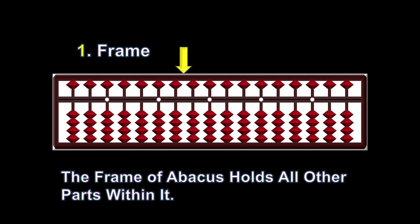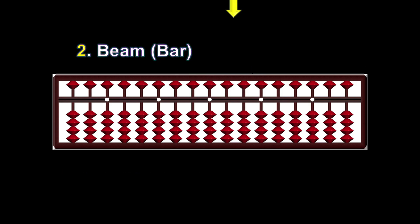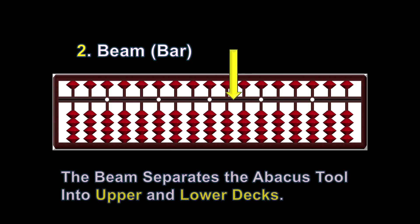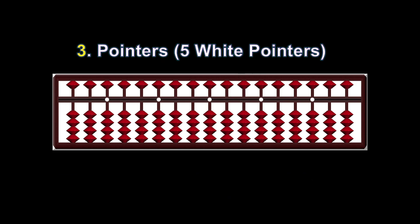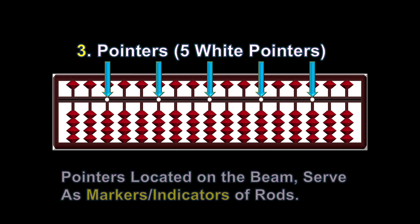The frame of the Abacus holds all other parts within it. The horizontal beam separates the Abacus tool into upper and lower decks. There are five white pointers; the pointers located on the beam serve as markers and indicators of rods.